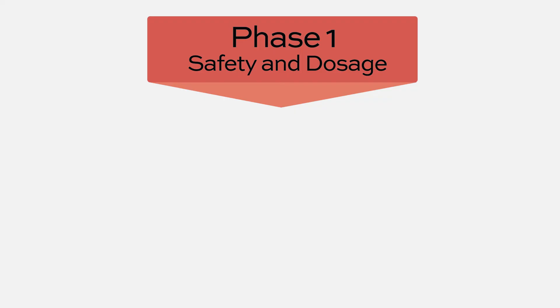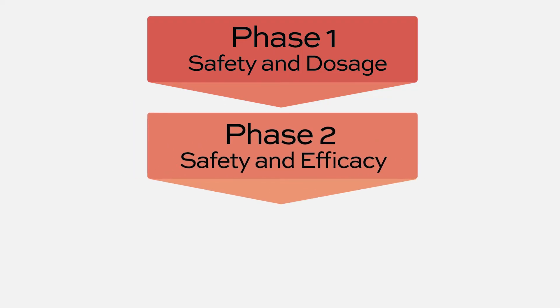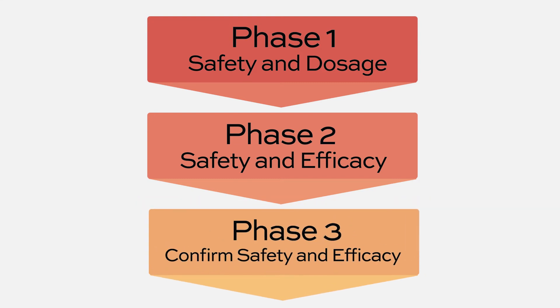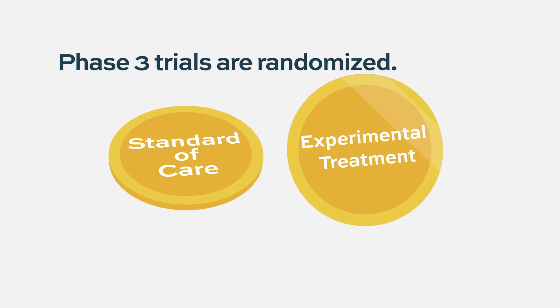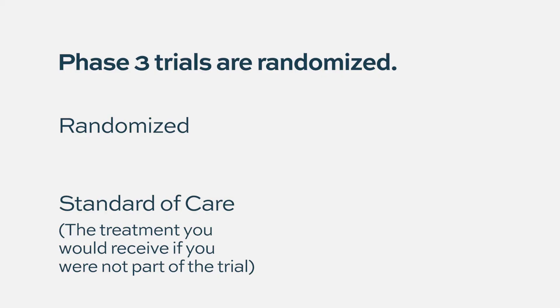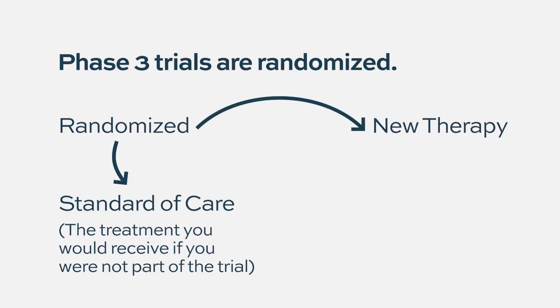A phase three study is done after phase one and two. Phase one looks at toxicity and schedule; phase two says yes, this drug or combination is effective. Now the question is: is it more effective or safer than the standard therapy? In large part, a phase three trial is a randomized study — the randomization is between a standard approach of therapy versus a new therapy.